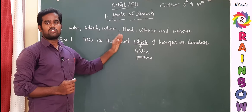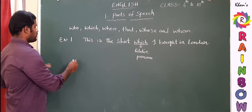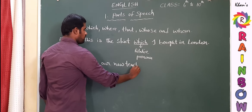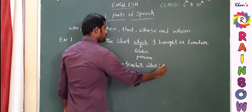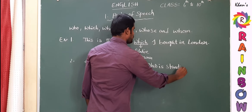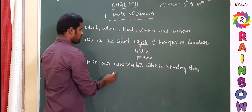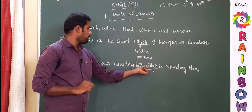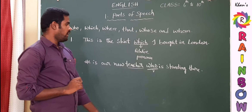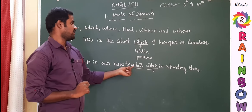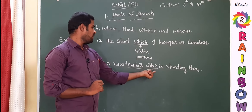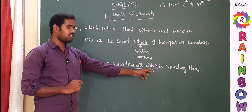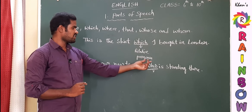Another example: 'He is our new teacher who is standing there.' Here 'who' is the relative pronoun. The word before 'who' is teacher — a noun. The remaining sentence 'who is standing there' supports and gives extra information about the teacher. So again the definition is fulfilled: relative pronouns are the words that stand for the nouns before them, giving extra information about those nouns or pronouns.